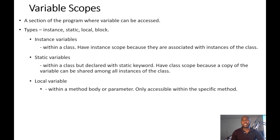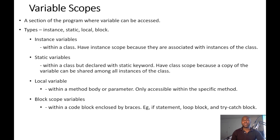The next we have on the list is the local variables. These are variables you create within a method. Then we have block scope variables — these are variables you create within a block of code that you enclose with curly braces. These variables are usually associated with try-catch, a for loop, and if statements where you enclose them with curly braces.